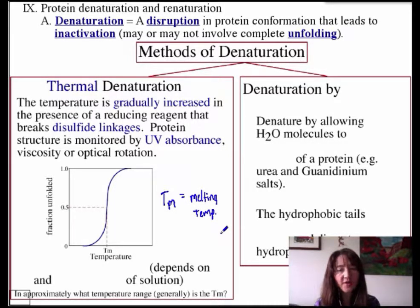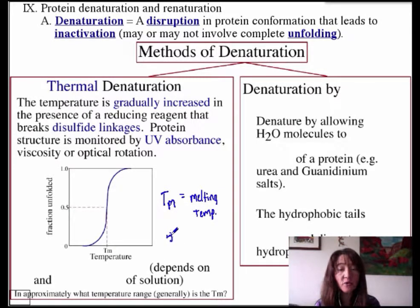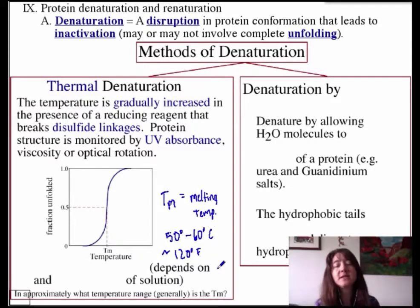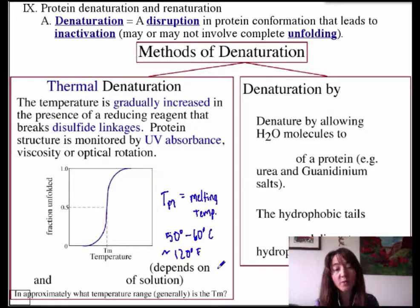It's interesting to note that for eukaryotic proteins, the melting temperature happens at about 50 to 60 degrees Celsius. Most of our proteins and enzymes do not like temperatures that exceed 50 to 60 degrees Celsius — approximately 120 degrees Fahrenheit. When you think about it, that's not that hot; it's maybe about 12 degrees or so over the temperature of a really hot hot tub. So it's a temperature at which we would not want most of our proteins to spend extended periods of time, and certainly one at which they begin to stop functioning.